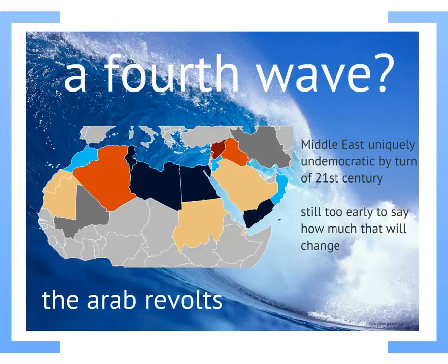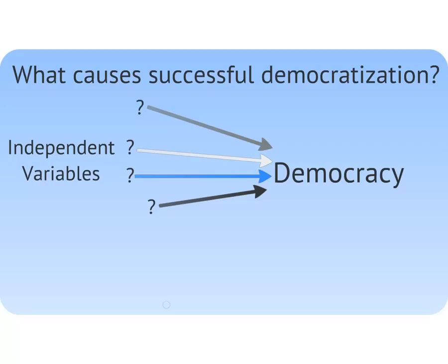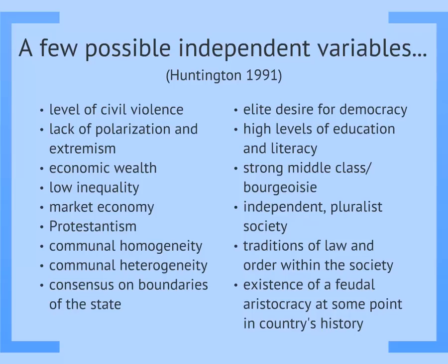So let's turn to thinking about what causes sustainable democracy. What could we use to predict whether and where the Arab revolts will result in democracy? In other words, democratization is our dependent variable — the effect we want to explain — and we are looking for its causes, or independent variables. Why did our waves occur where and when they did? This is an enticing question, so it's an enormous part of political science. Here's just a partial list offered by Samuel Huntington, including everything from a market economy to Protestantism to the desires of political elites to a history of having a feudal aristocracy.